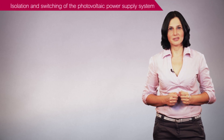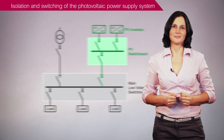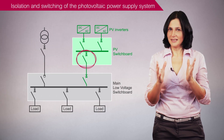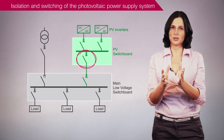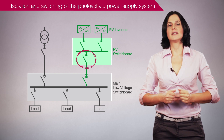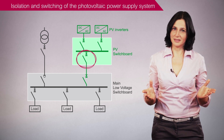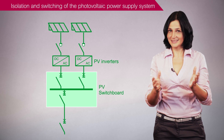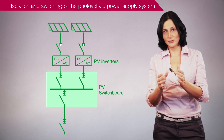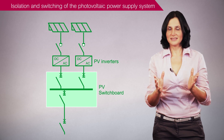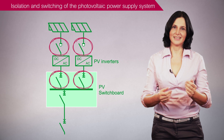Let's consider the isolation and switching of the photovoltaic power supply system. An AC disconnection device must be located at the photovoltaic switchboard to isolate the photovoltaic system from the rest of the electrical installation during maintenance. Additionally, an isolation function must be provided for the photovoltaic inverters by disconnection means on both the DC side and the AC side.